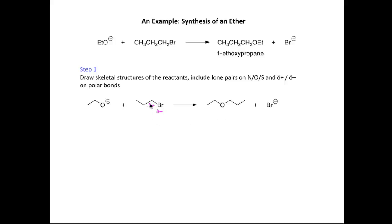We recognize the polar carbon-bromine bond in 1-bromopropane, hence the delta plus and delta minus. We don't need to include lone pairs separately because the negative charge indicates the lone pair on oxygen, and another on bromine. For step two, the ethoxide ion could potentially act as a base, but since ethanol isn't formed as a product, we don't have an acid-base reaction in this case.